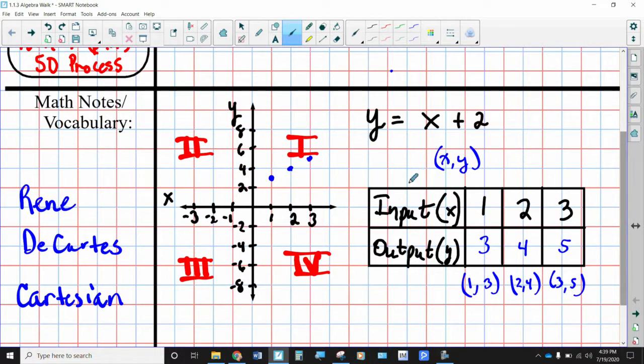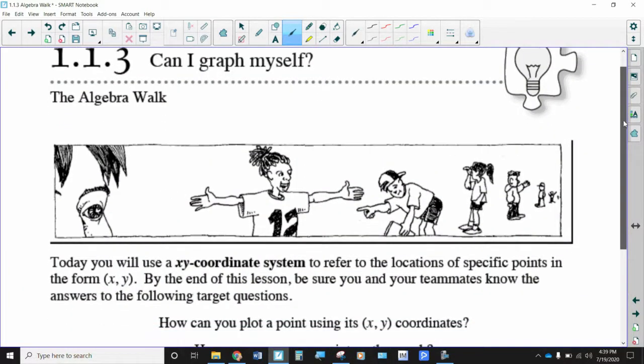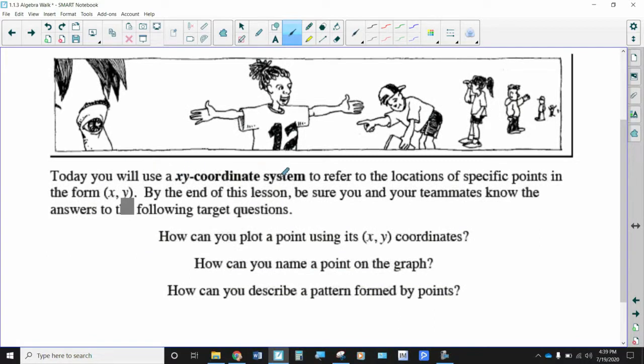This is the idea of what we're going to be working with today. What we're going to do is we're going to look at some trends between different types of rules to determine which ones form straight lines, which direction do those lines go in, and which ones form what we would call nonlinear rules or nonlinear functions because they don't form a straight line. Today, you will use an XY coordinate system to refer to the locations of specific points. By the end of this lesson, make sure that you reflect on these target questions.